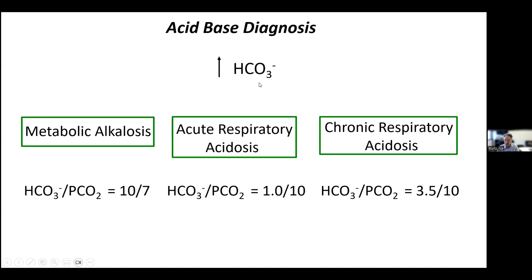Don't make the mistake of diagnosing based on the bicarbonate value alone. A lot of people see a bicarbonate of 32 and say that must be a metabolic alkalosis — that's totally incorrect. It could be any of the three. You have to look at the change in PCO2 versus the change in bicarbonate to distinguish them. And if the elevated bicarbonate doesn't fall into one of the three, either you have another acid-base disorder present, or you haven't reached a final steady state.